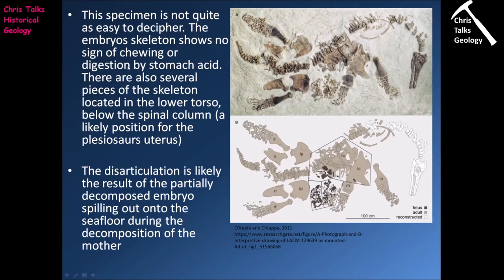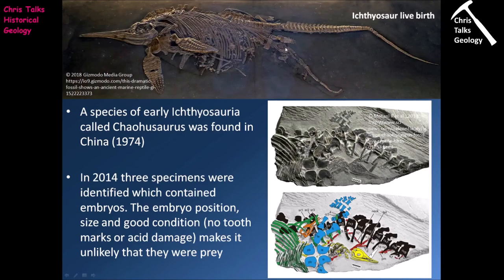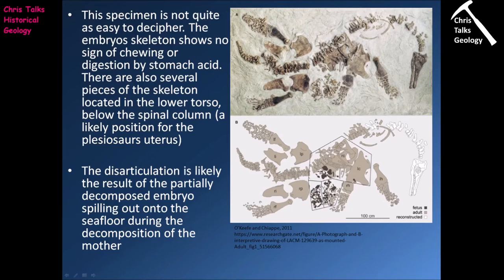When we look at these bones, once again they don't show any teeth marks and they don't show any effects of having been digested by stomach acid. So these bones don't appear to have been from a prey item — they are more than likely from an embryo. Looking at the embryo position, the darker brown patches represent some of the embryo bones located underneath the spinal column at the base of the ribcage, pretty much where you would expect the uterus to have been located. The disarticulation of the embryo is likely the result of the partially decomposed embryo spilling out of the mother onto the seafloor.